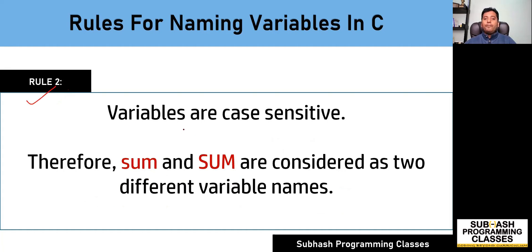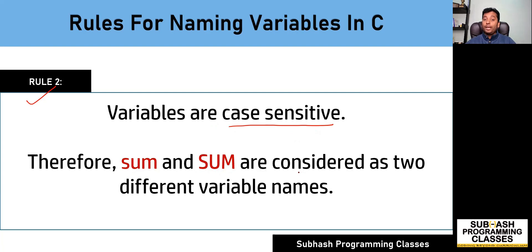Rule number two says variables are case sensitive. This is more of an important information rather than a rule. It means the lowercase variable name 'sum' and the uppercase variable name 'SUM' are both considered as two different variable names — they are not the same; they are two different variables. So this is rule number two.